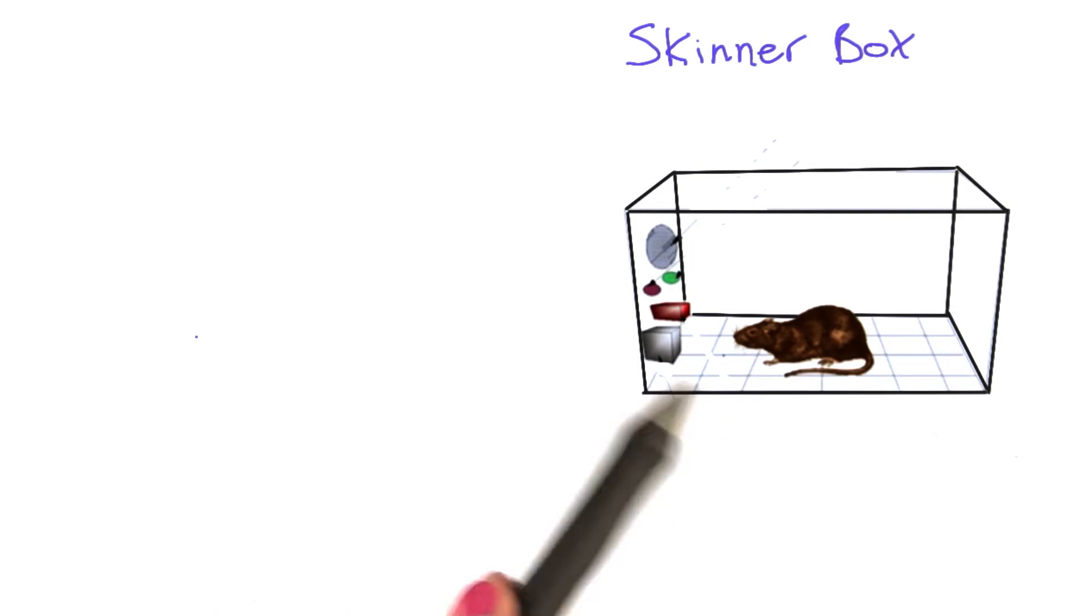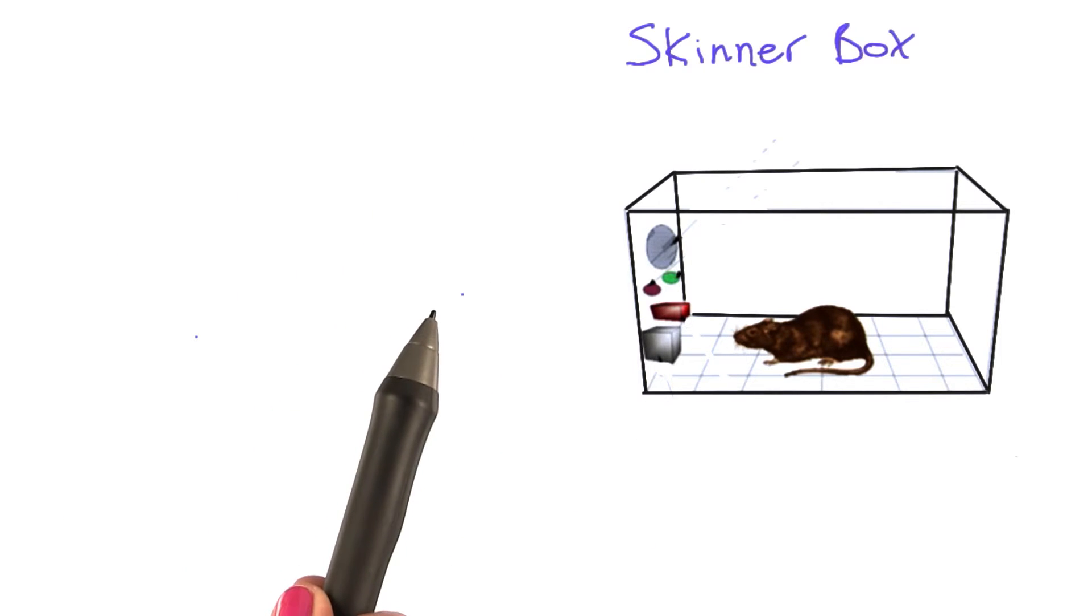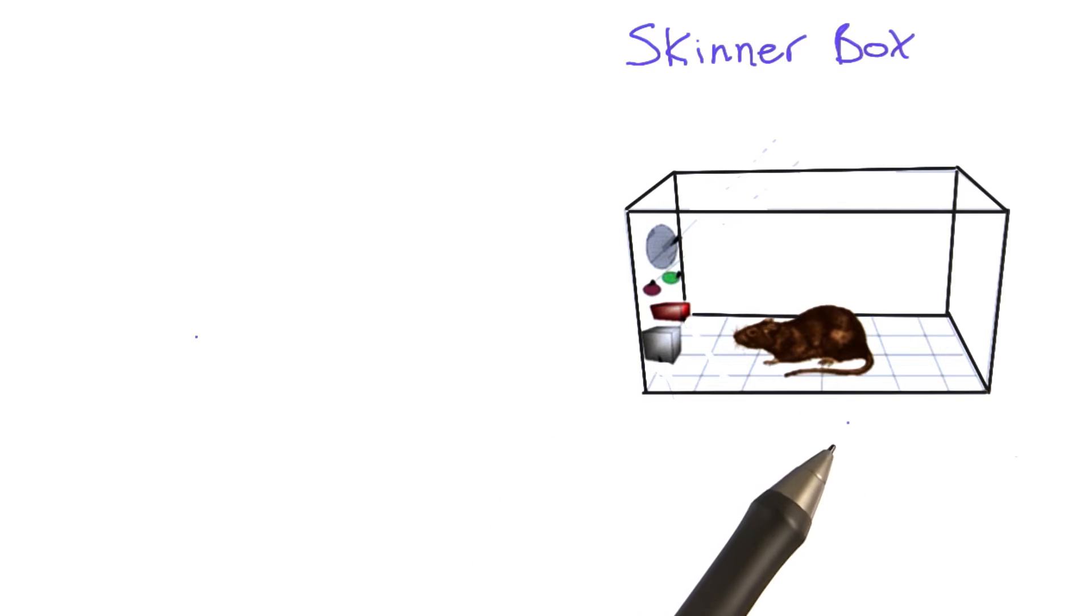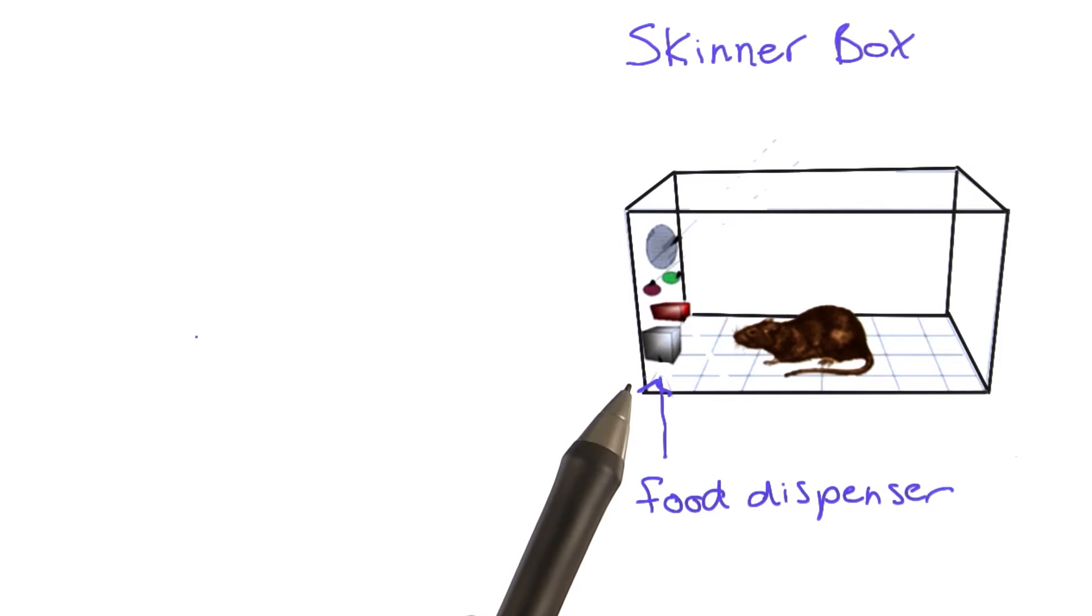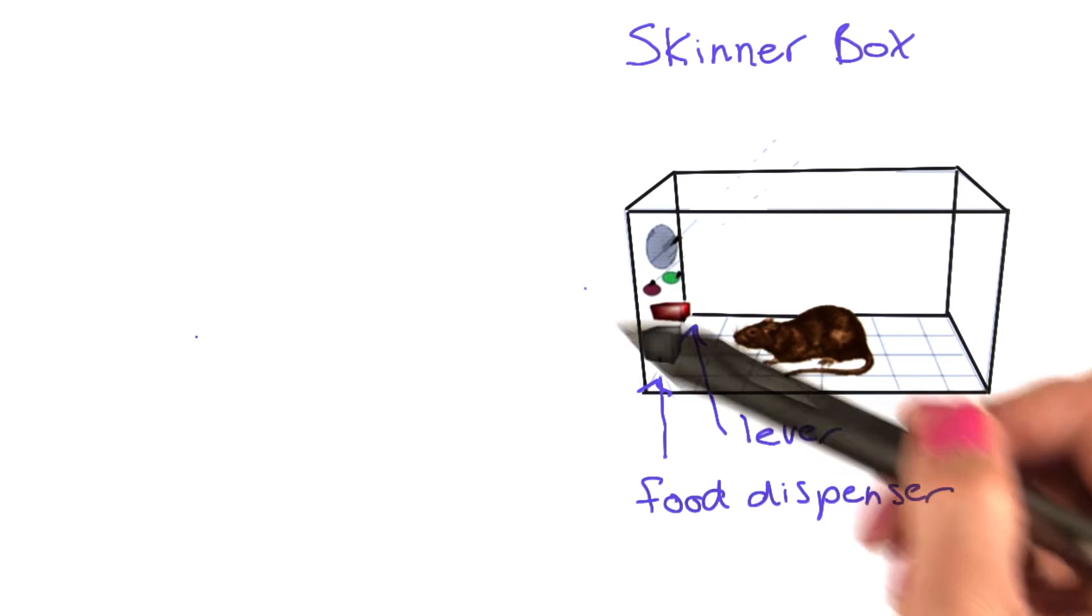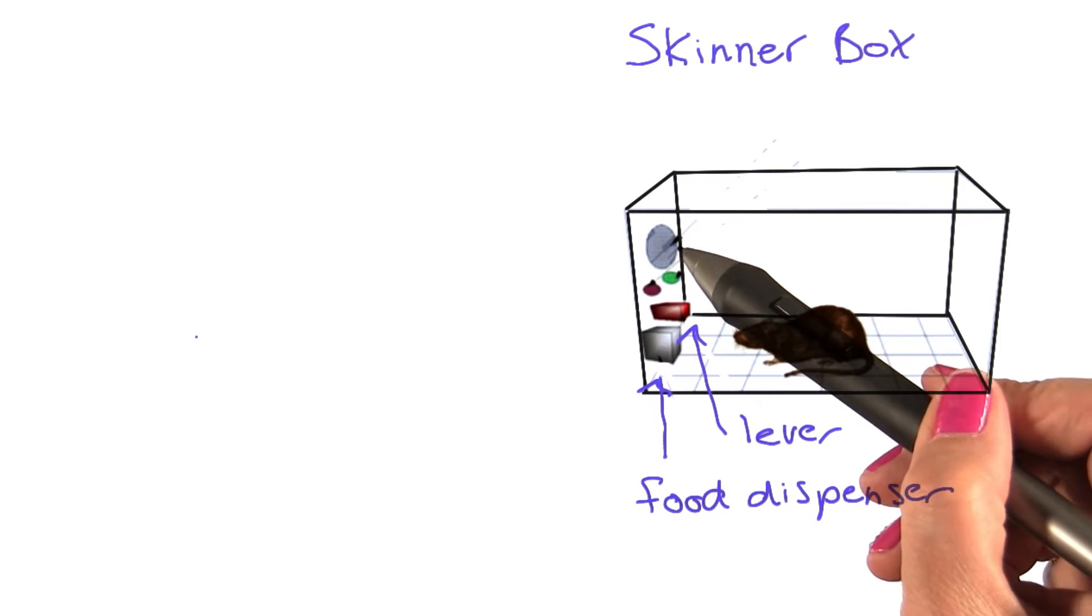BF Skinner studied rats and pigeons in an operant conditioning chamber, which is called a Skinner box. Inside the Skinner box, they have a food dispenser and a lever that the rat can press. Other conditioning chambers have things such as lights as well.